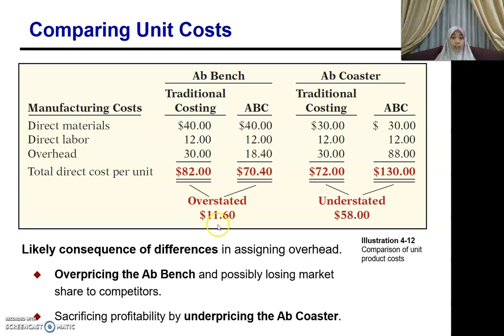So you can see that the traditional method has overstated the cost. The difference is RM11.60 — that is, RM82 minus RM70.40. Under activity-based costing the cost is only RM70.40, but traditionally you identified the cost as RM82, so you have overstated the cost by RM11.60.